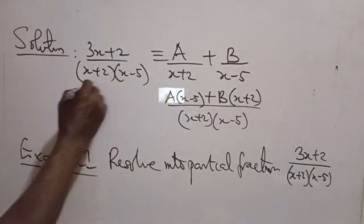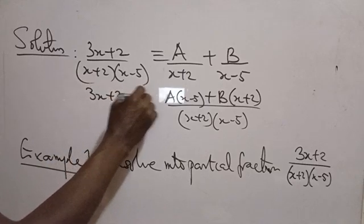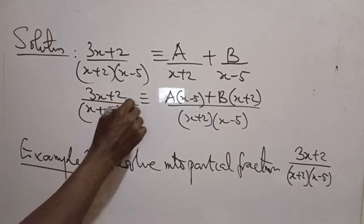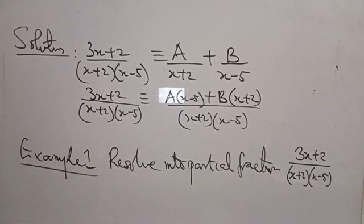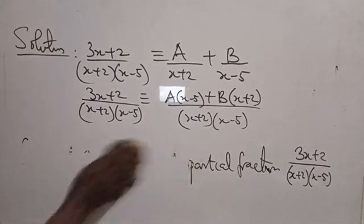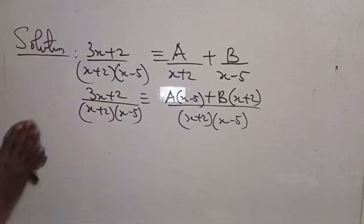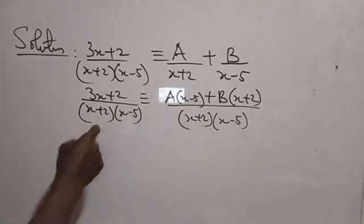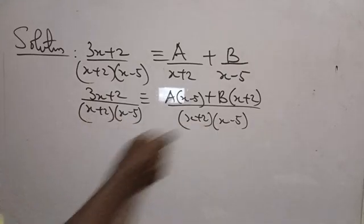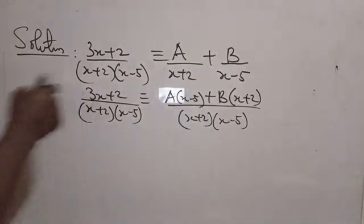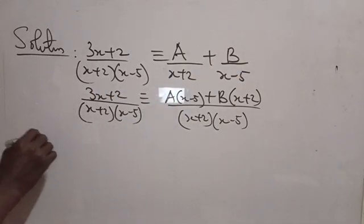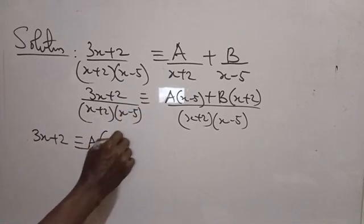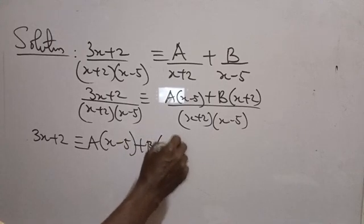Don't forget, this corresponds to 3X plus 2 over (X plus 2)(X minus 5). The next thing: since the denominators on both sides are the same, we don't need the denominator. So we have: 3X plus 2 corresponds to A(X minus 5) plus B(X plus 2).